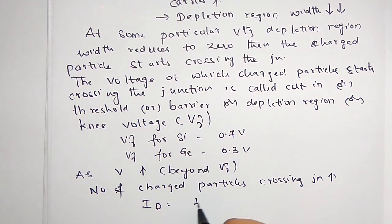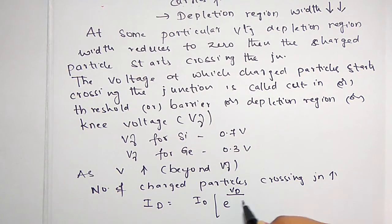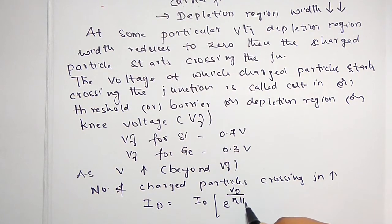As voltage increases beyond V gamma, the current through the diode increases non-linearly. This is given by the diode equation: Id = I0 × (e^(Vd / eta × Vt) − 1).